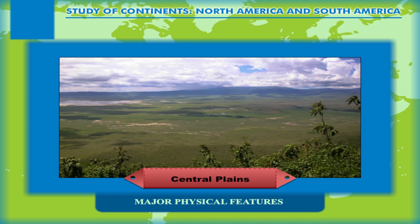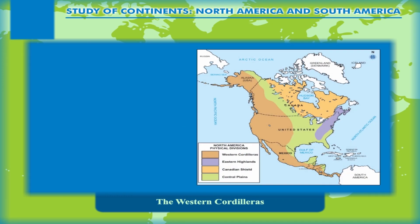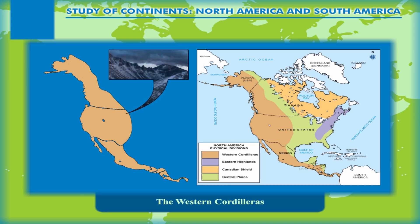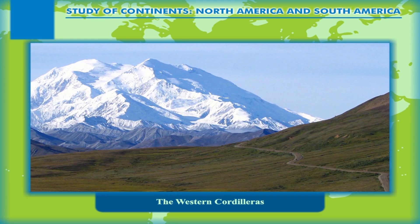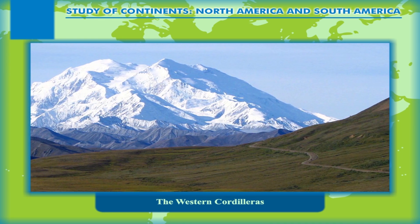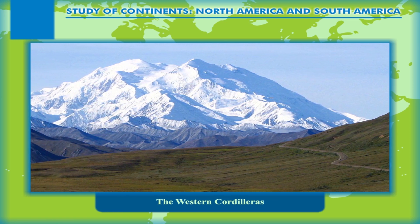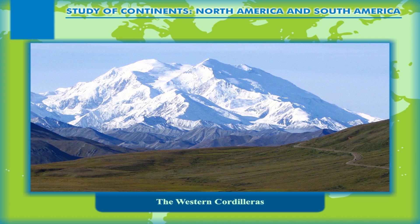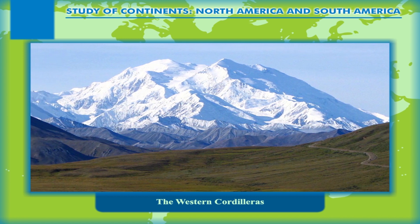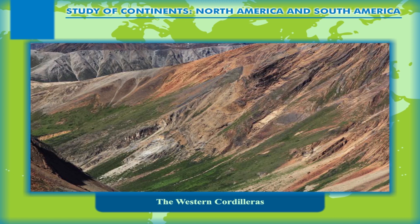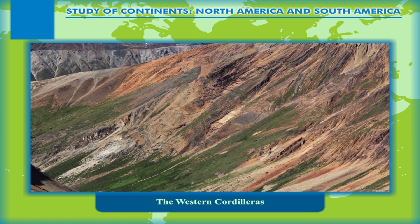The Western Cordilleras: these mountain ranges extend from north to south in a series of parallel ranges. Beginning from the north are the Brooks and the Alaska ranges in the Alaska state of USA. Mount McKinley in the Alaska range is the highest mountain peak of North America. In Canada lie the Mackenzie Mountains.